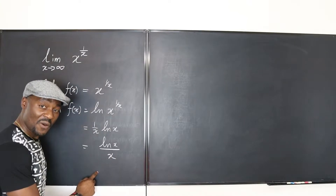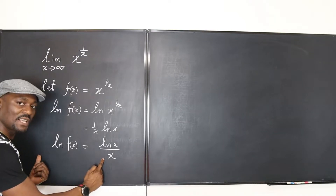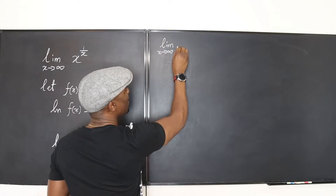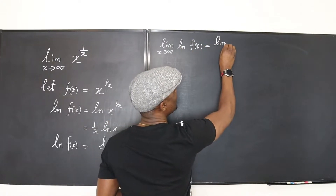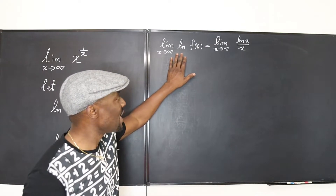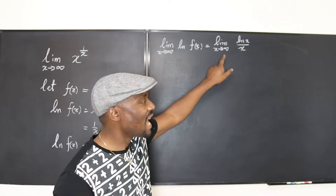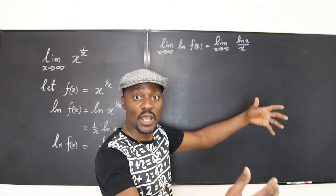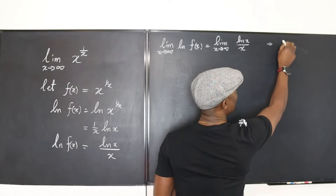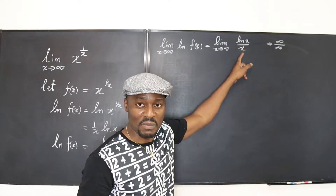Now that we have this rational expression, I'll take the limit of both sides. The limit as x goes to infinity of ln(f(x)) equals the limit as x goes to infinity of ln(x) over x. As x goes to infinity, the natural log of x also goes to infinity and x goes to infinity, so we get the indeterminate form infinity over infinity — but now we have a rational expression.